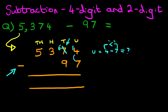We add it to the units. The units now becomes 14 minus 7. What is 14 minus 7? That's right, the answer is 7.